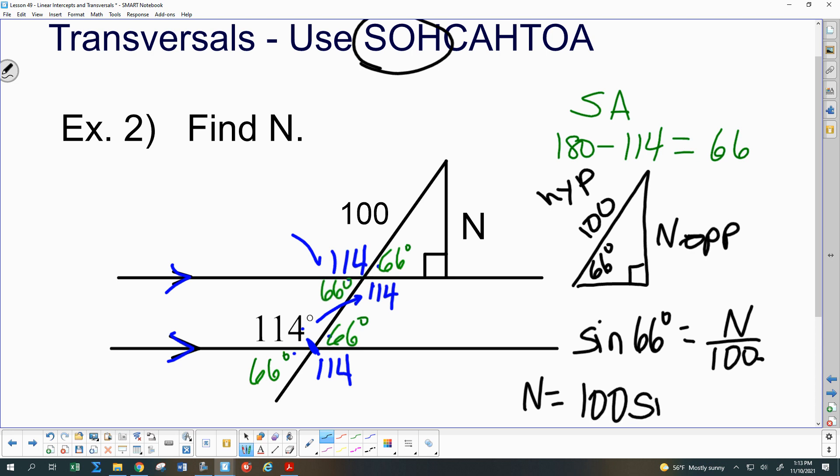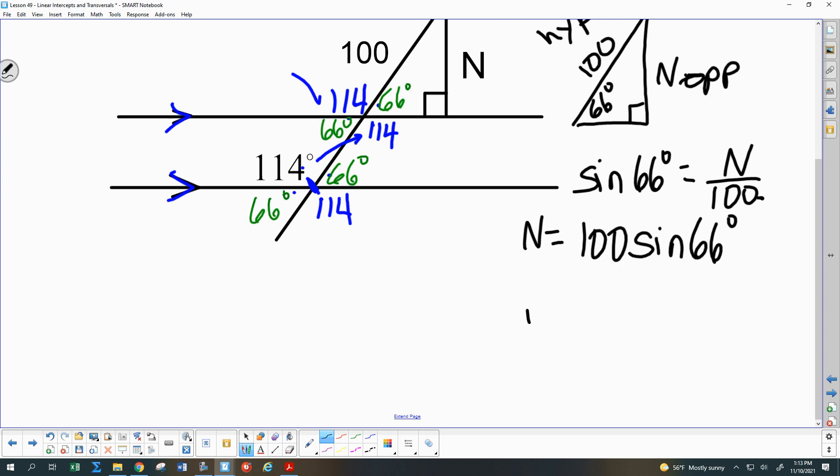So 100 times the sine of 66, and we always put the number we're multiplying it by out in the front. So punch that in your calculators. Raise hands when you've done that. Have it all ready, Ada? What did you get? 91.355. Does that look good to others? See heads nodding. All right, thank you. Does that one make sense to everybody?